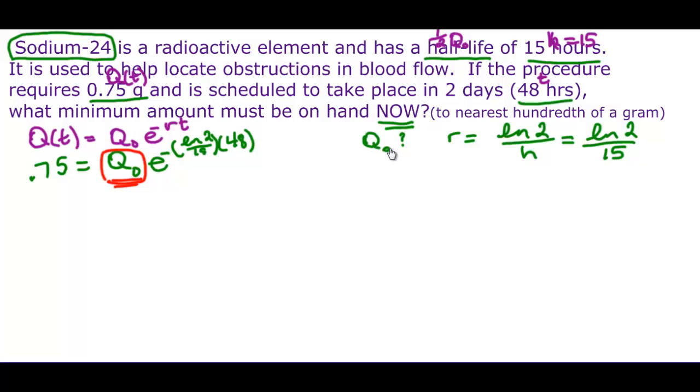Well, we can divide 0.75 divided by that e, e to the negative ln 2 over 15 times 48. All of that is my exponent, is equal to Q₀. That's what we want.